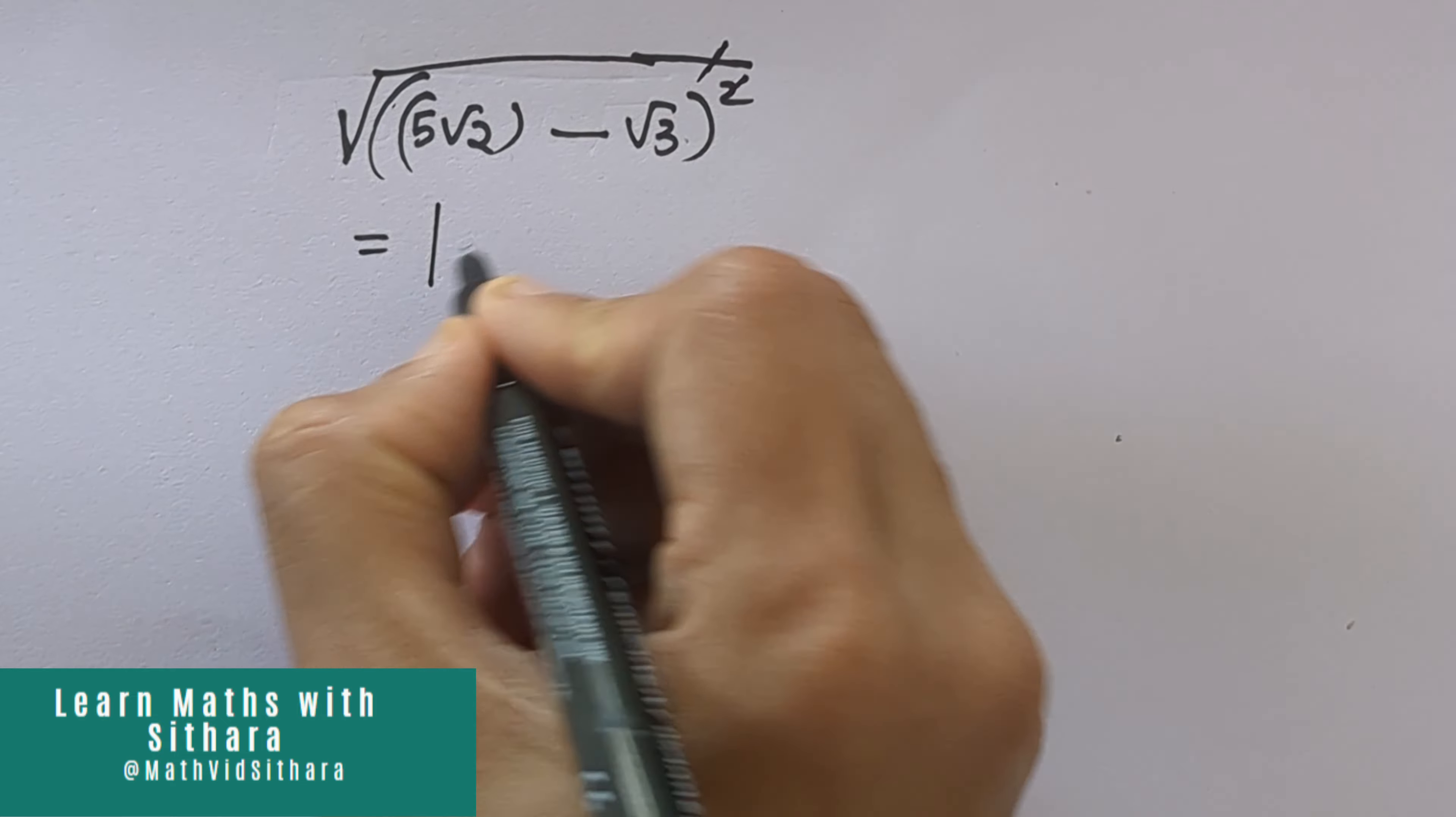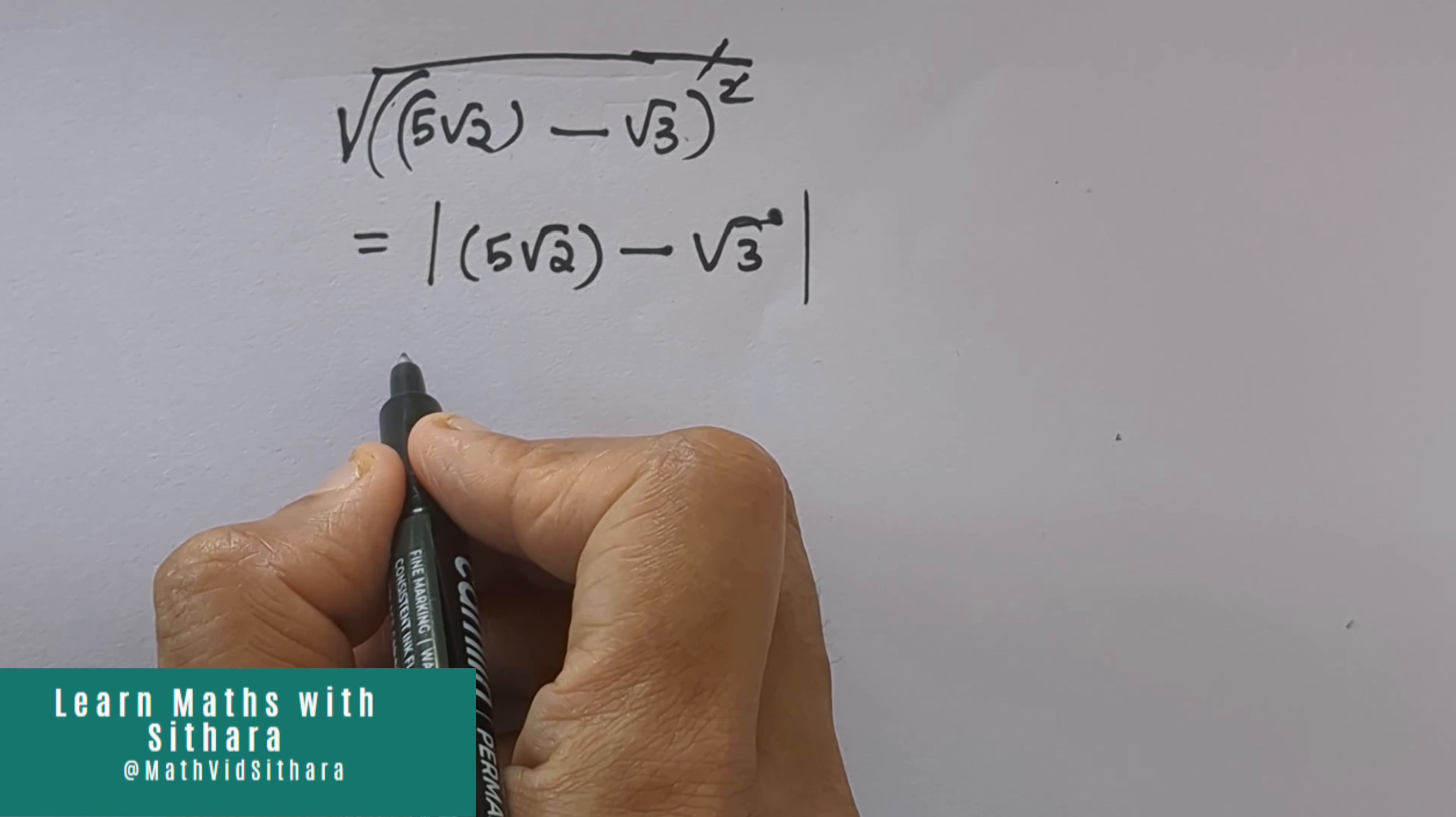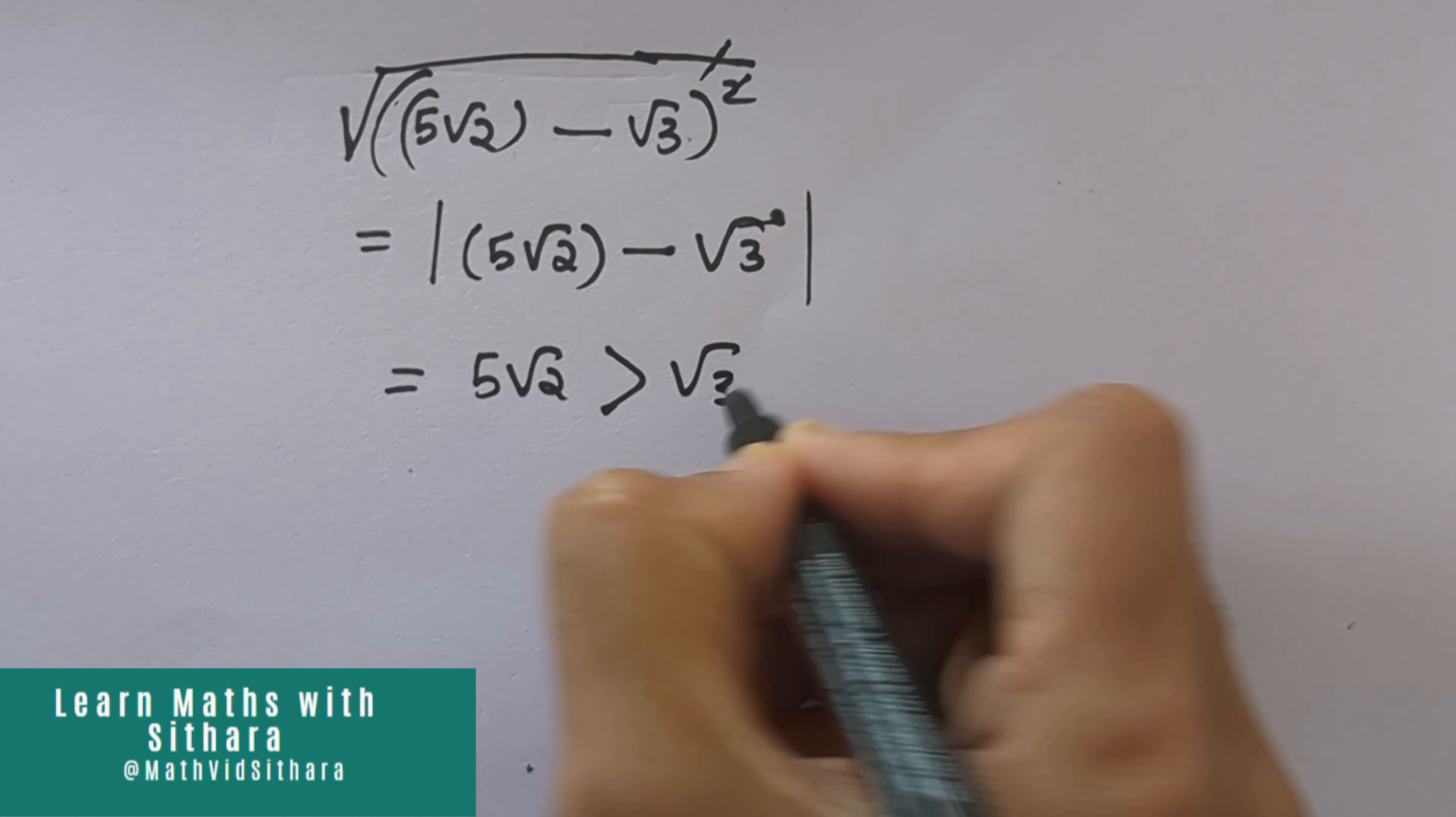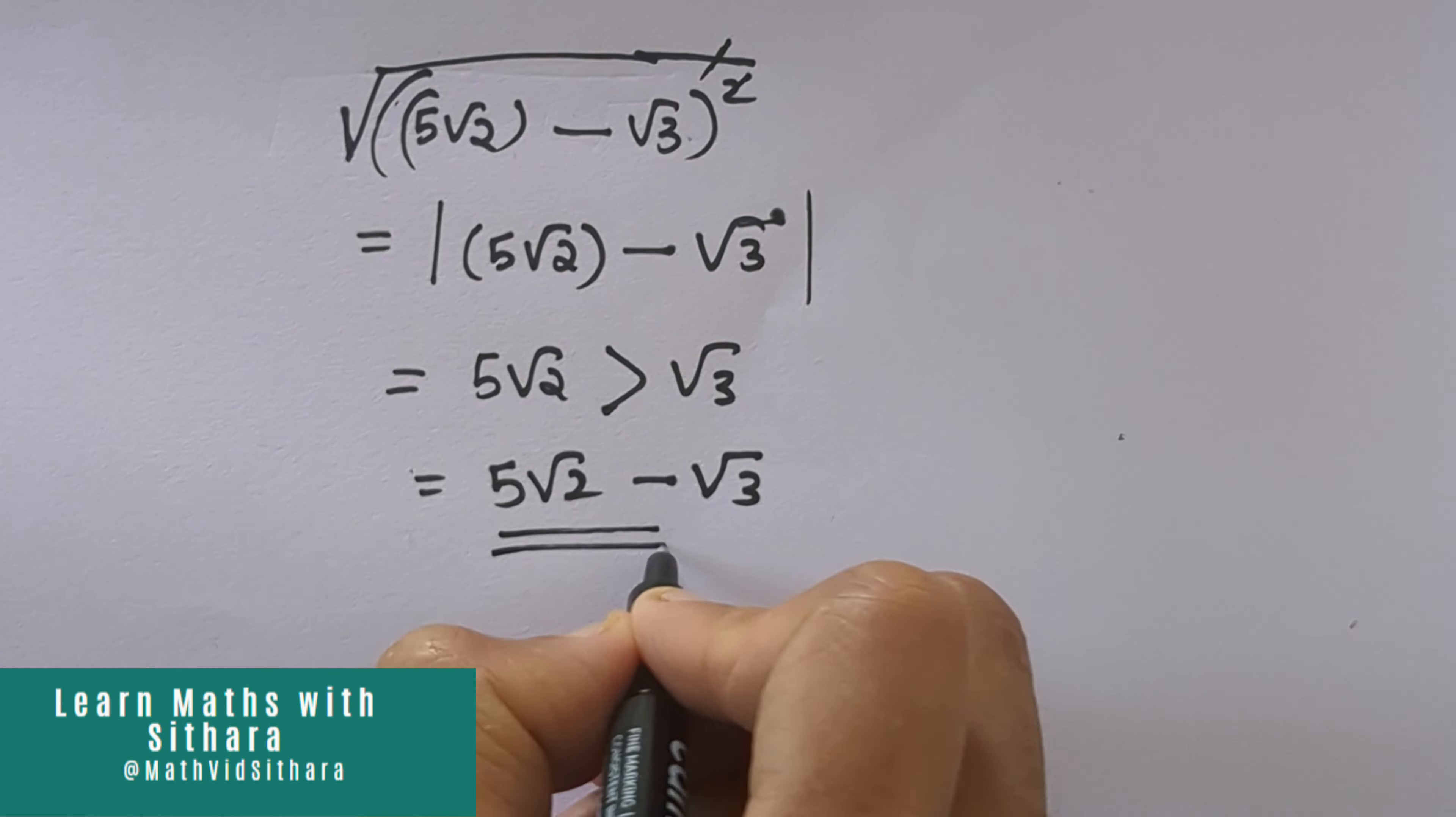We know that 5 root 2 is always greater than root 3, so it's a positive value. So the answer is 5 root 2 minus root 3, and it's a simplified form.